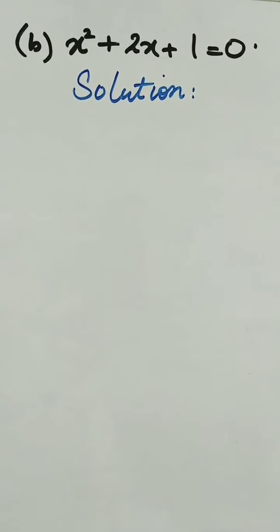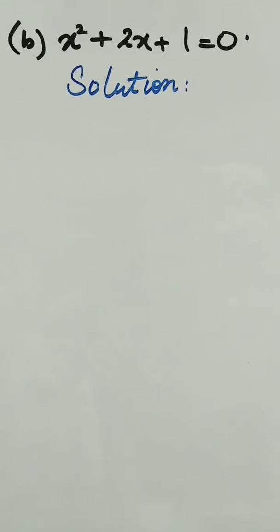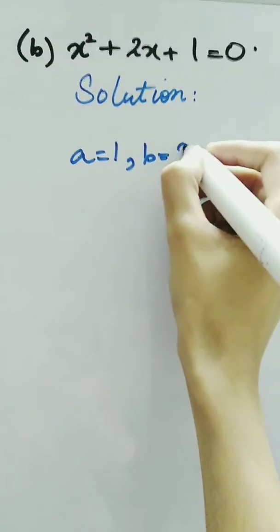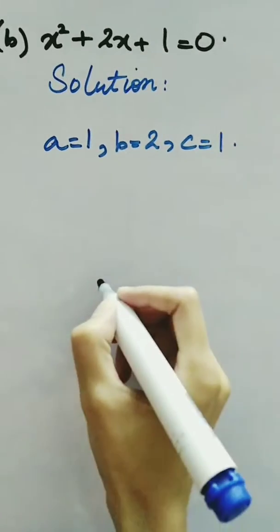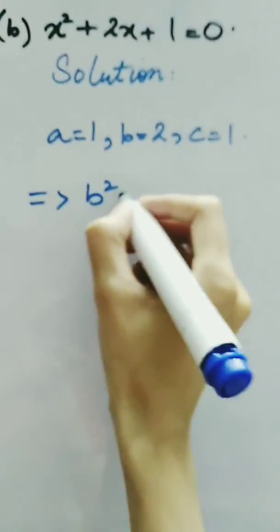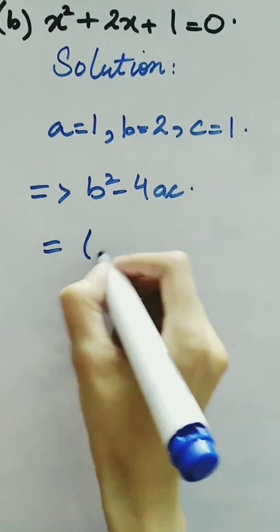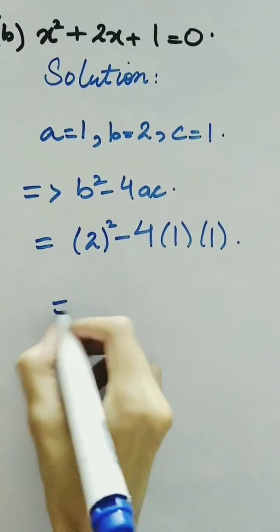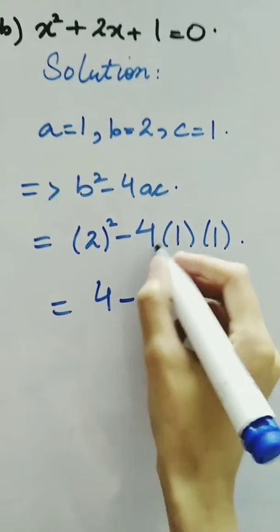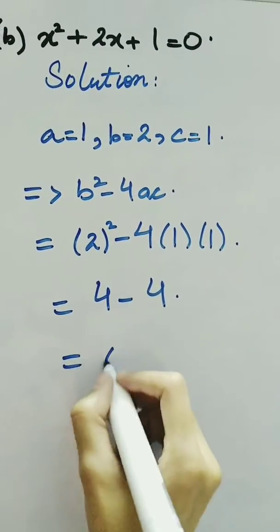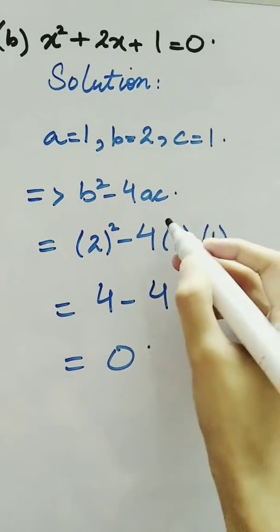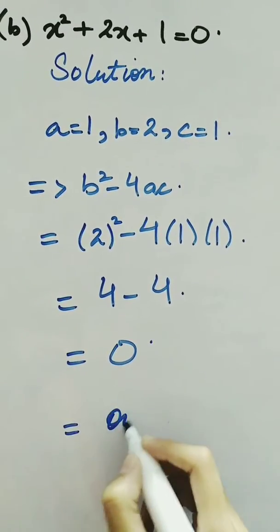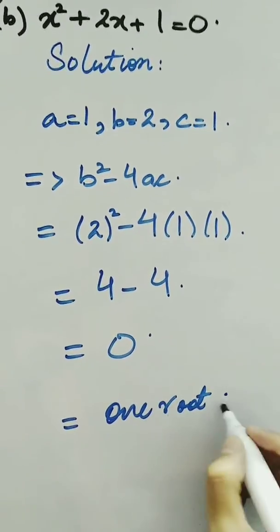Now look at another question: x squared plus 2x plus 1. Here the value of a is 1, b is 2, and c is 1. We find the value of the expression b squared minus 4ac. So we have 2 squared minus 4 times 1 times 1. That gives 4 minus 4, which equals 0. So if b squared minus 4ac is 0, we know that we only have one root, which is also called a repeated root.